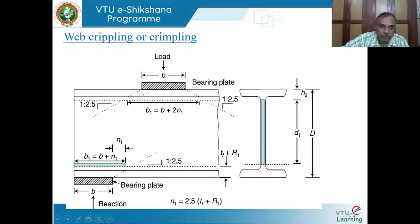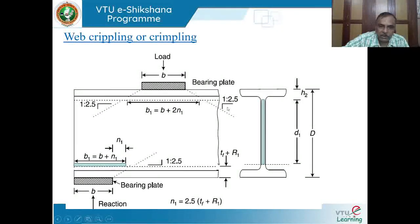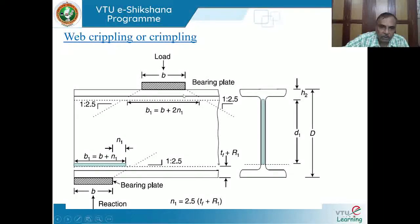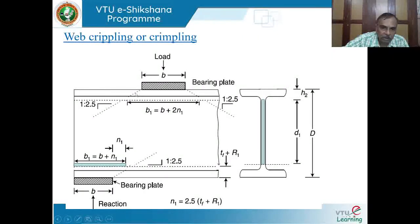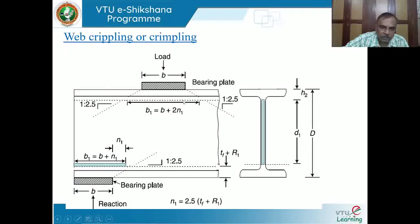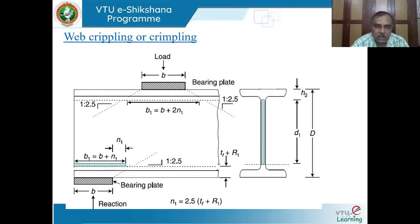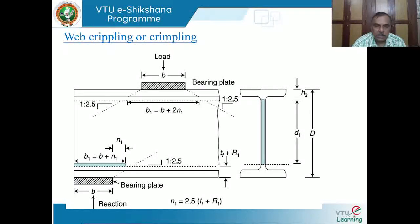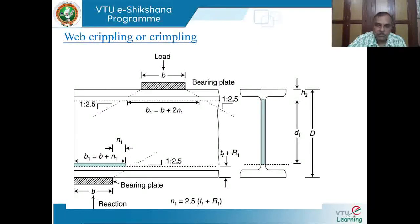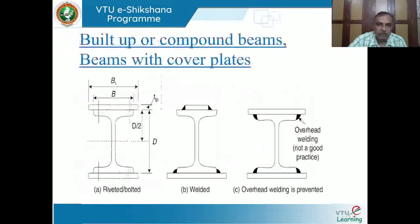For double dispersion under a concentrated span load, the total bearing width is b + 2N1. The stress from the applied load divided by this area should be less than the yield stress FY. Design problems will help to understand and appreciate this concept fully.